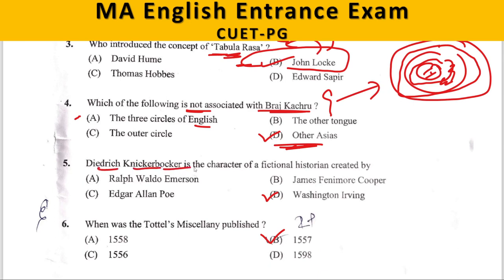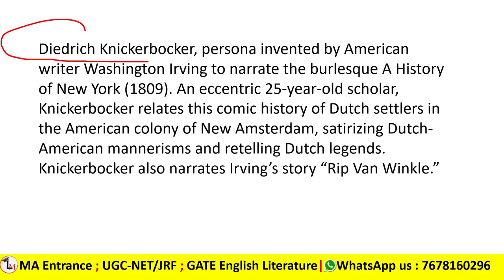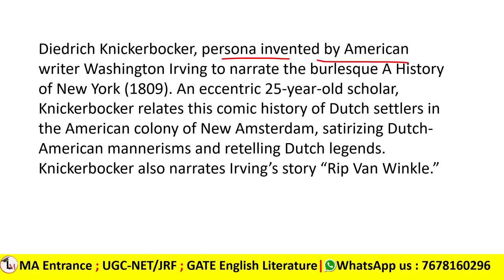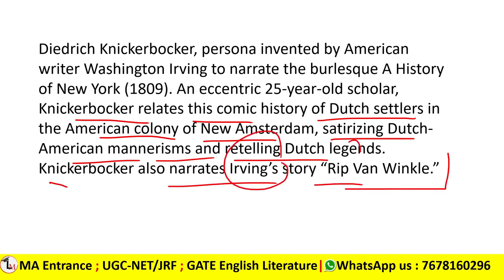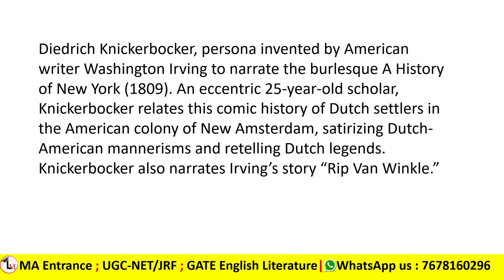Next question: Diedrich Knickerbocker is the character of a fictional historian created by — A. Ralph Waldo Emerson, B. James Fenimore Cooper, C. Edgar Allan Poe, D. Washington Irving. The correct answer is Washington Irving. This is a persona or character invented by Washington Irving to narrate the burlesque 'A History of New York.' This character relates the comic history of Dutch settlers in the American colony of New Amsterdam, satirizing Dutch-American mannerisms and retelling Dutch legends. Knickerbocker also narrates Irving's story 'Rip Van Winkle.' This is a question from American literature.